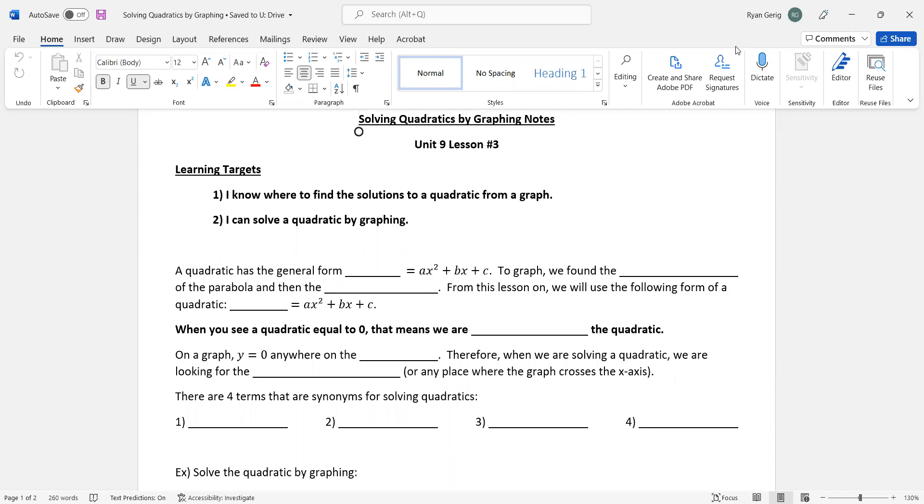So a quadratic has the general form y = ax² + bx + c. To graph, we found the middle of the parabola, right? That's lesson one. And then the vertex, again lesson one. From this lesson on, we will use the following form of a quadratic. It's going to be a very minor change. Notice that ax² + bx + c is still the same, but it's not equal to y this time. It's going to be equal to zero.